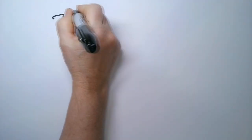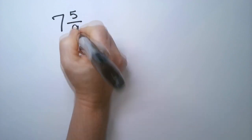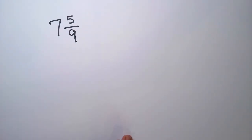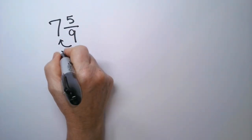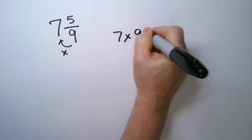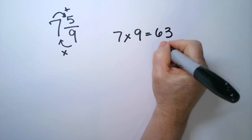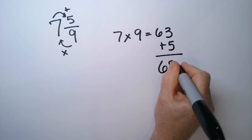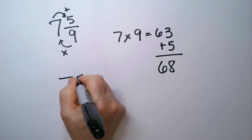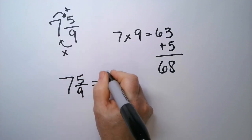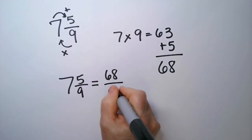I have 7 and 5 ninths. Okay? So, the first thing we're going to do is multiply these together, so 7 times 9 is 63, and then we're going to add to that number 5. So, I have 68. So, 7 and 5 ninths is the same as 68 ninths.